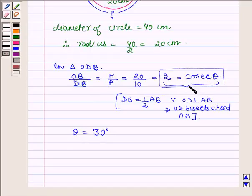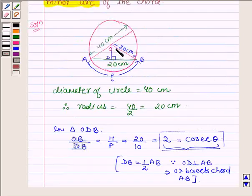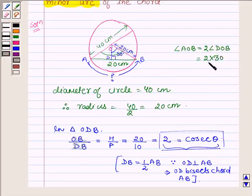Now this angle is theta which is 30 degrees. Therefore this whole angle, that is angle AOB, which is 2 times angle DOB, will be equal to 2 into 30, that is 60 degrees.